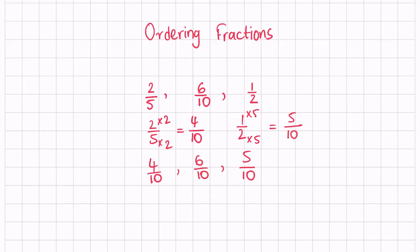Now we can compare all the fractions: four over ten, six over ten, and five over ten. We can see four over ten is the smallest. When you write the answer, you need to write down the original fraction given in the question. Four over ten is equivalent to two fifths, so we write two fifths. The next is five tenths, but the original fraction in the question is a half, and then we have six tenths.